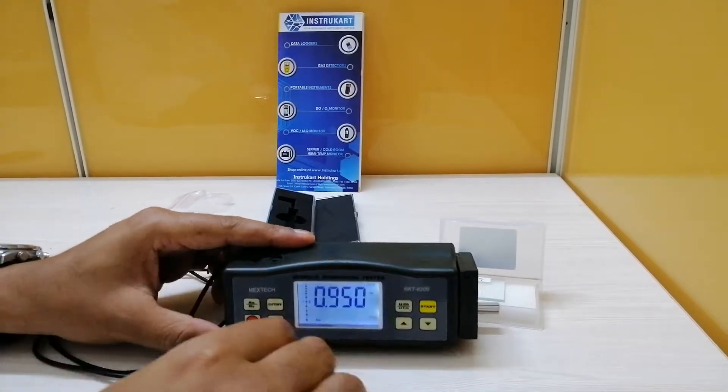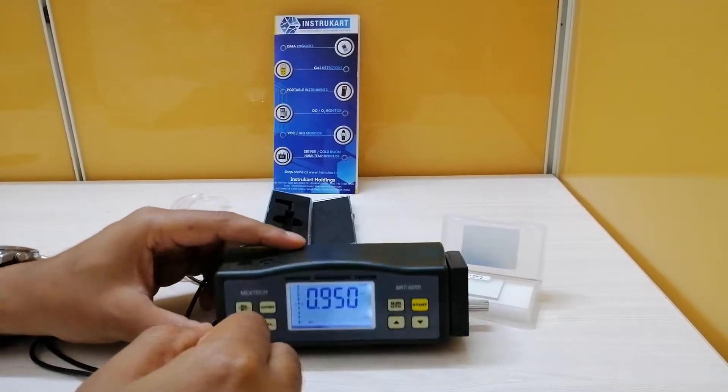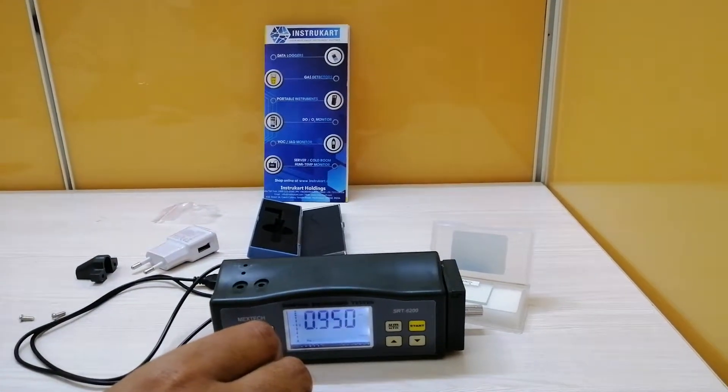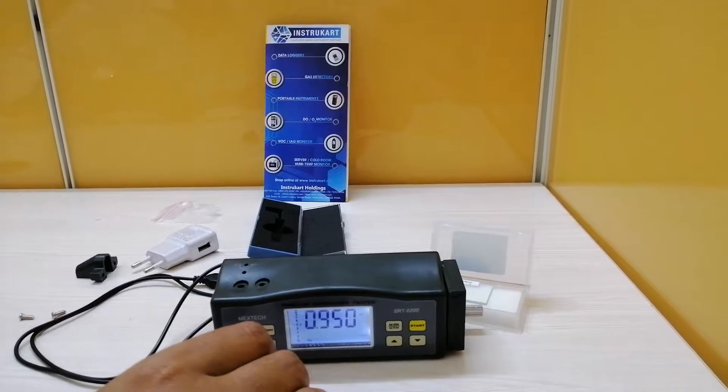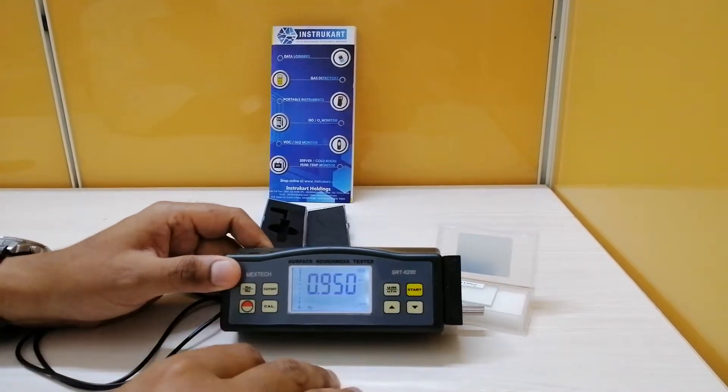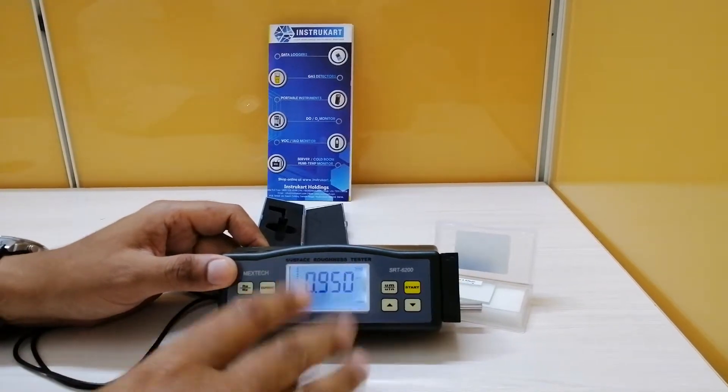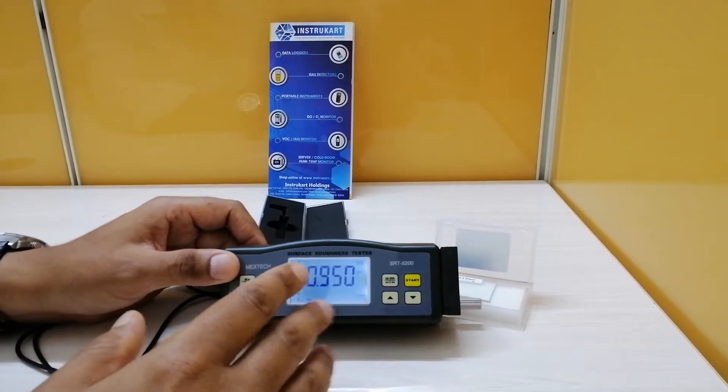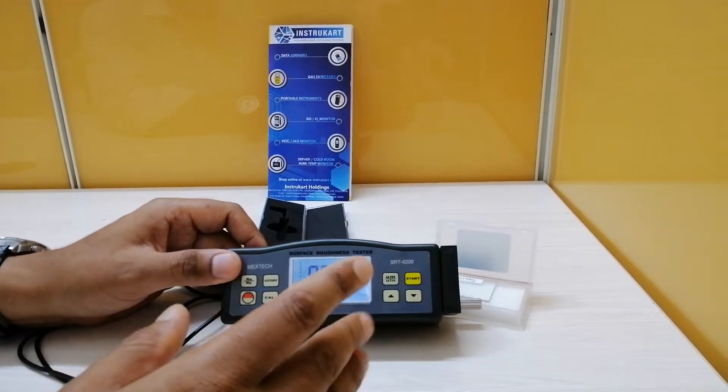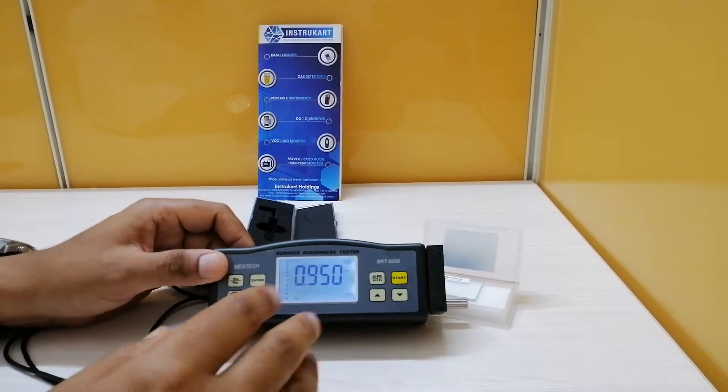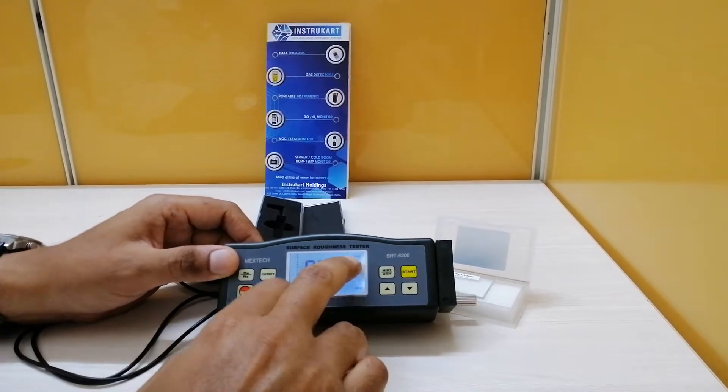These keys are basically used by the user to adjust this device and also to calibrate it. There are certain displays which come like the calibration display or the measurement display or the parameter display between RA and RZ, the cutoff and the unit, and the battery indicator.